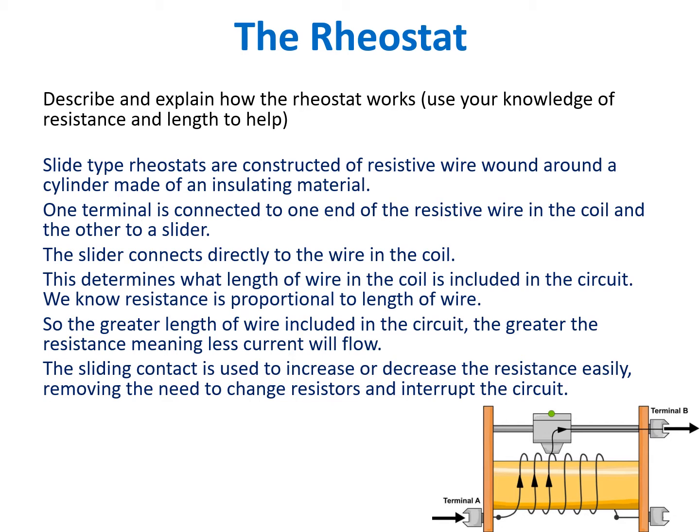One terminal — in this instance terminal A — is connected to one end of the resistive wire in the coil, and the other to a slider. So terminal B is connected to the slider. The slider connects directly to the wire in the coil, so this slider is touching here. This determines what length of wire in the coil is included in the circuit.